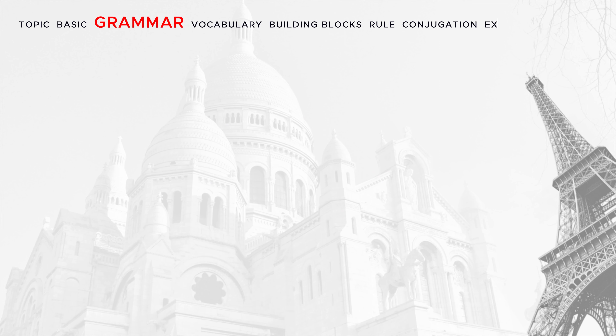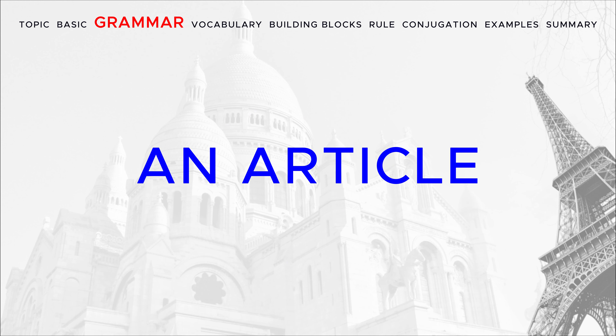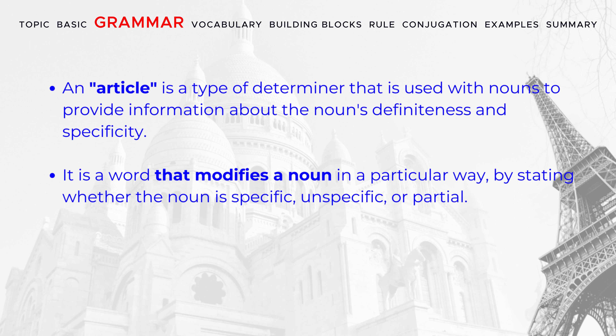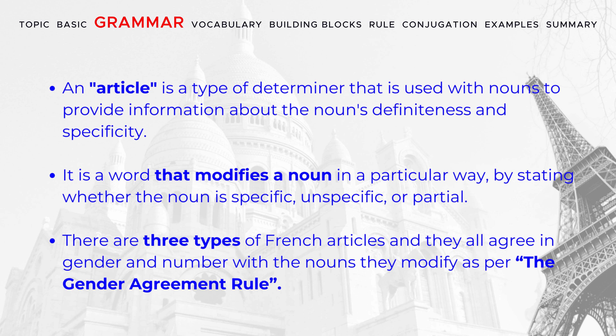We have already learned what an article is in our last lesson. An article is a type of determiner that is used with nouns to provide information about the nouns' definiteness and specificity. It is a word that modifies a noun in a particular way by stating whether the noun is specific, unspecific, or partial.